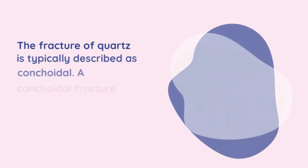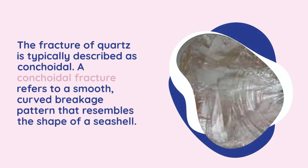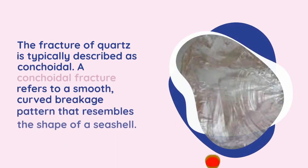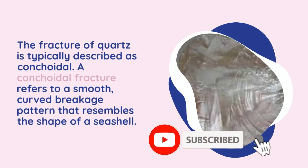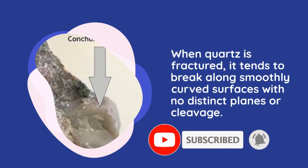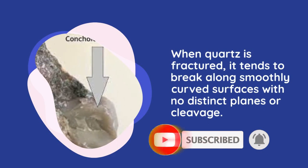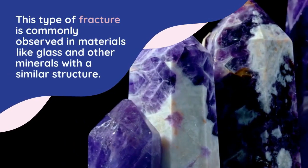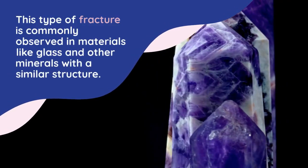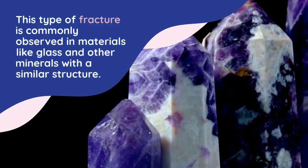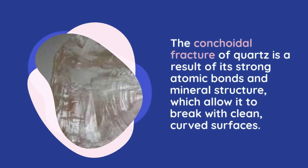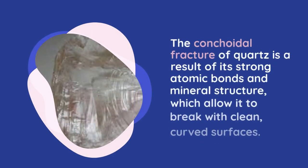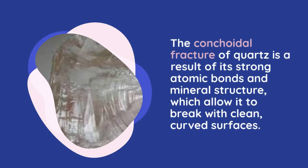Fracture: The fracture of quartz is typically described as conchoidal. A conchoidal fracture refers to a smooth, curved breakage pattern that resembles the shape of a seashell. When quartz is fractured, it tends to break along smoothly curved surfaces with no distinct planes or cleavage. This type of fracture is commonly observed in materials like glass. The conchoidal fracture of quartz is a result of its strong atomic bonds and mineral structure, which allows it to break with clean, curved surfaces.